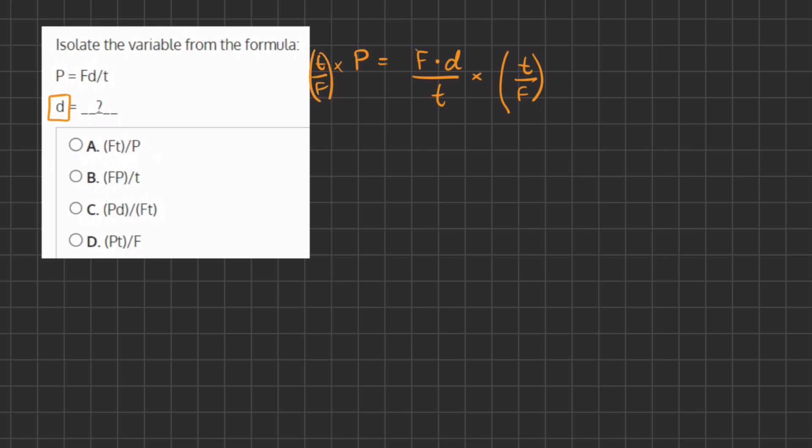Then it's going to look like this: the f's are going to cancel out and the t's are going to cancel out on the right hand side. On the left hand side we have t times p, which is p times t or the other way around, all over f.